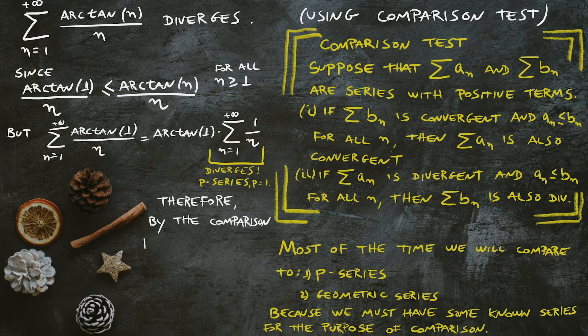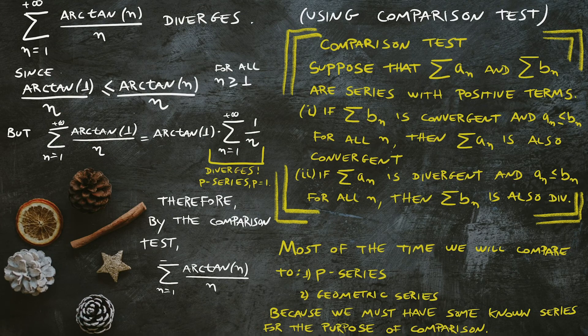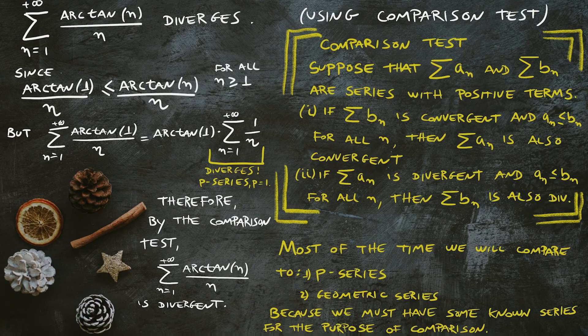But the series 1/n diverges because it's a p-series with p equals 1. Therefore by the comparison test, the series from 1 to infinity of arctan(n)/n is divergent.